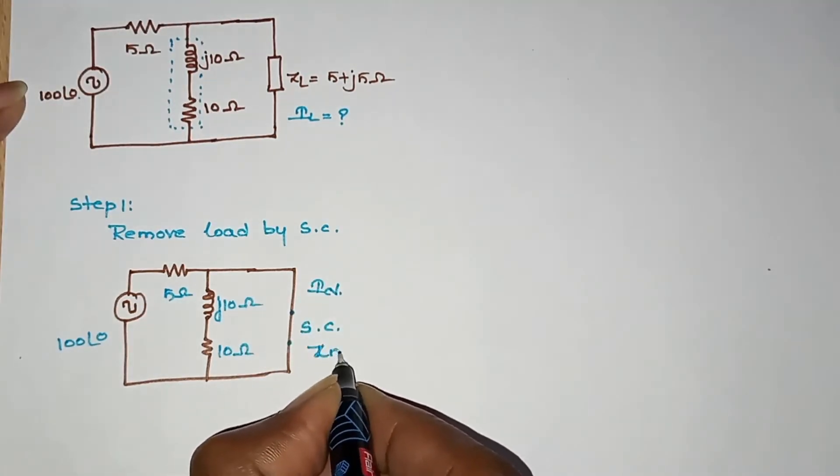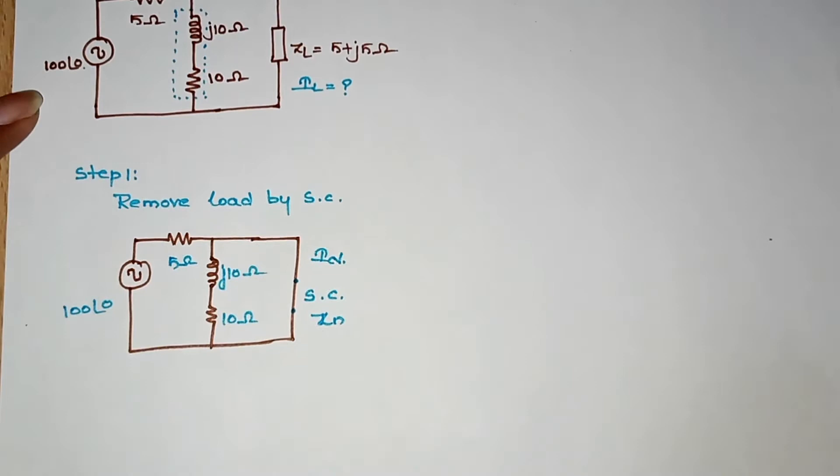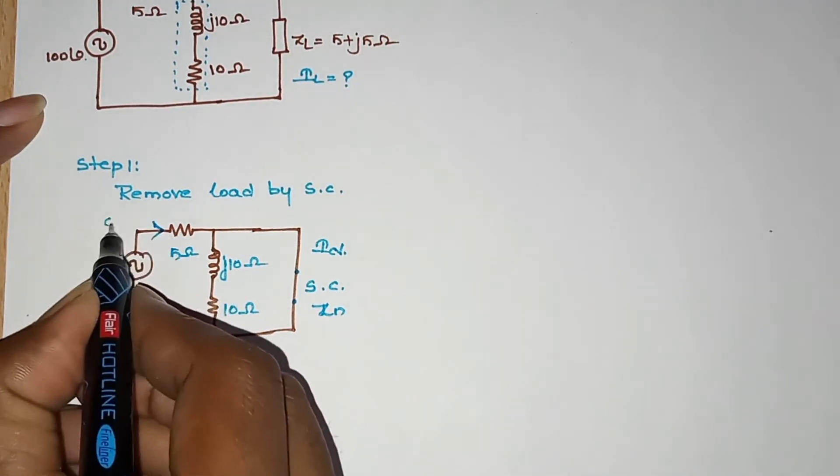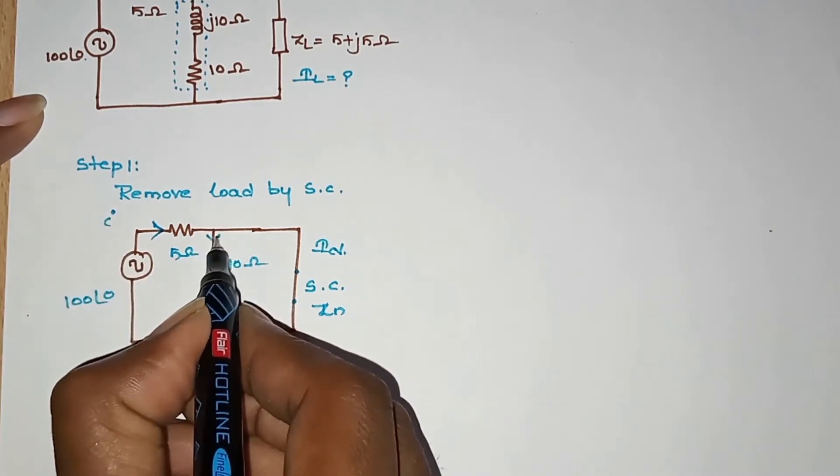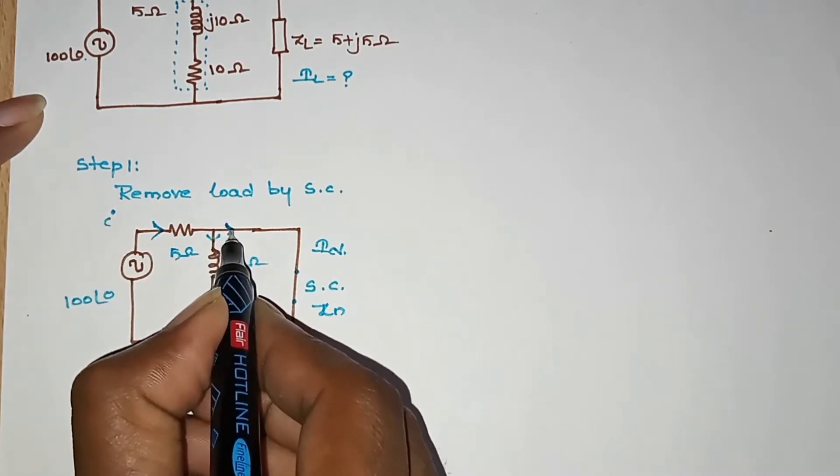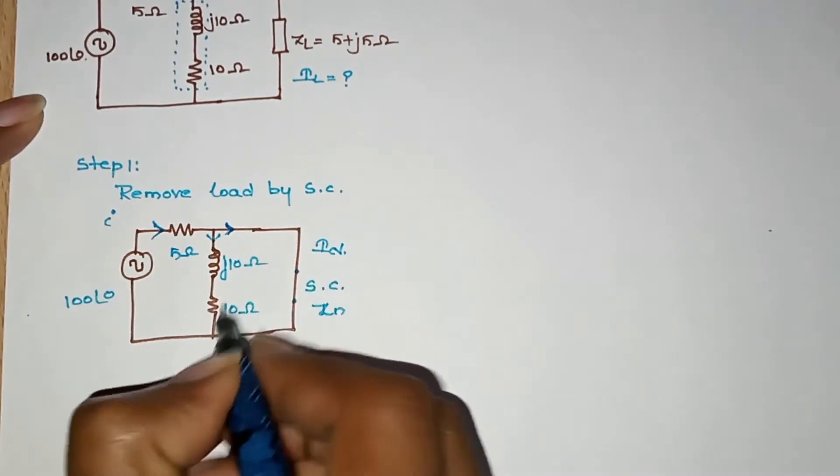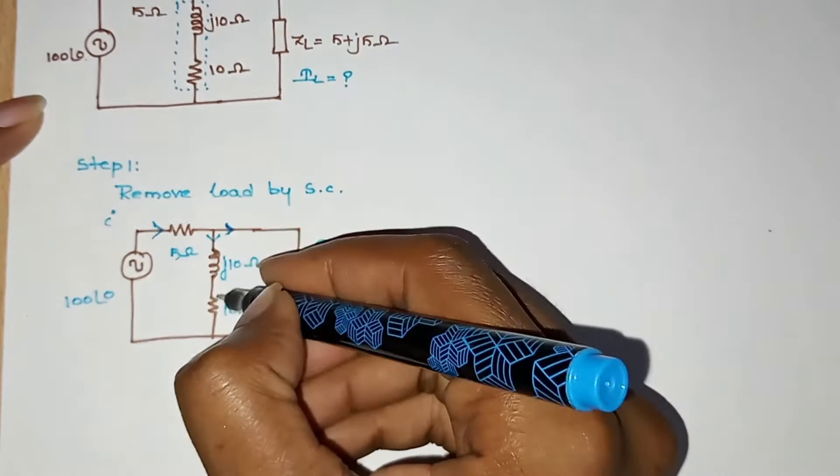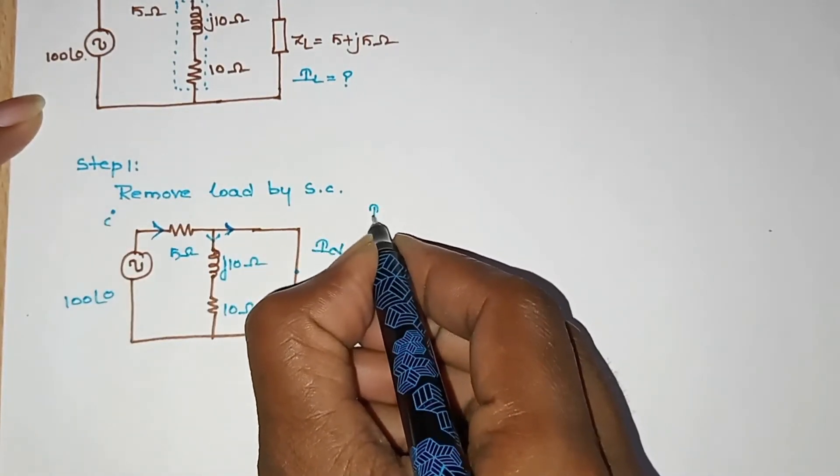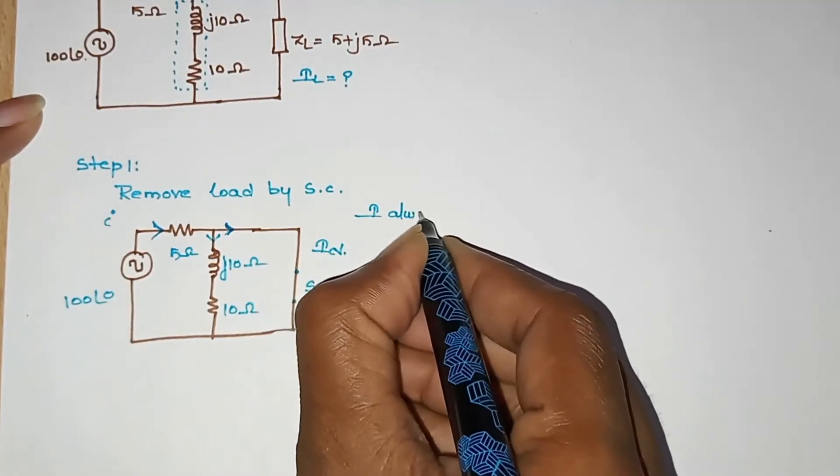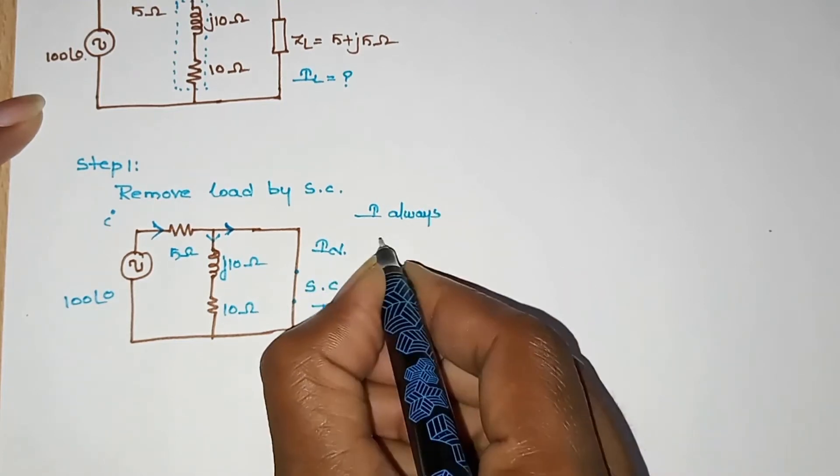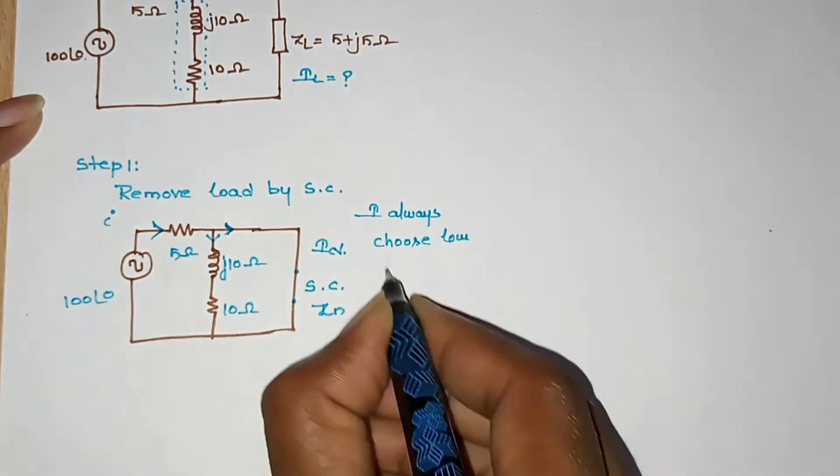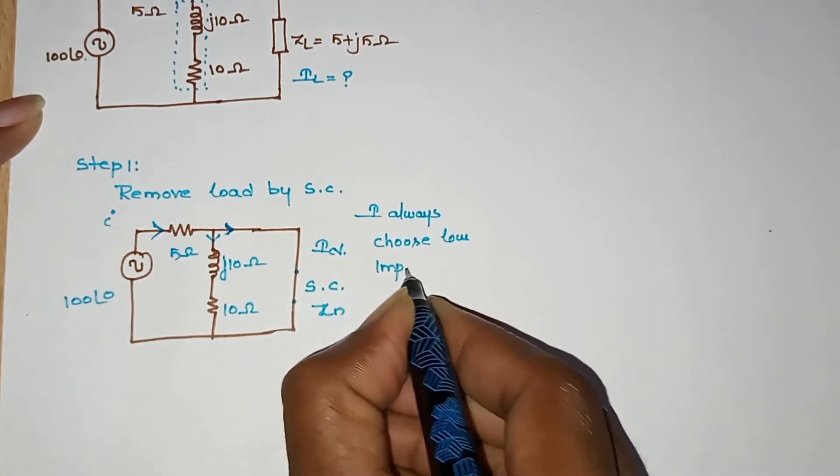We will choose a short circuit. This is j10 and we will choose the short circuit. As you can see, here is the current path. This path is the source circuit path. I always choose low impedance path.